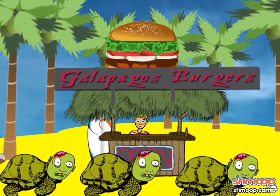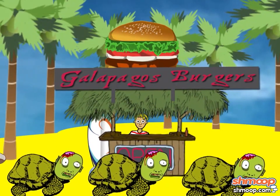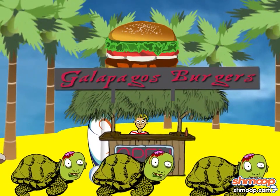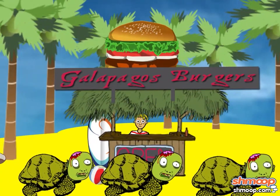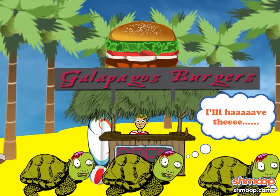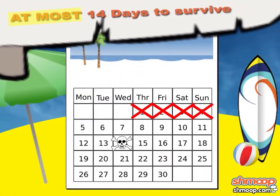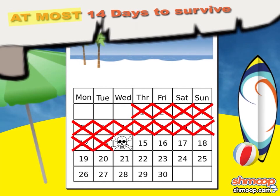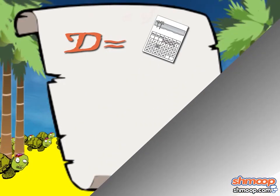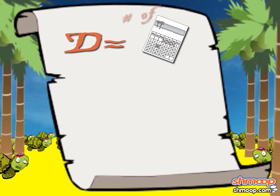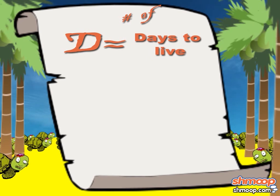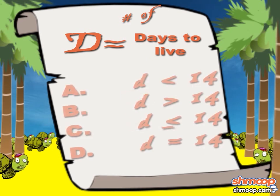You need to get off the island. You know how zombies are slower than humans? Zombie tortoises are even slower than regular tortoises, so you have a lot of time. You have at most 14 days before the zombies reach you. If D equals your days to live — notice the D there — how would you express this in an inequality? Here are your choices.